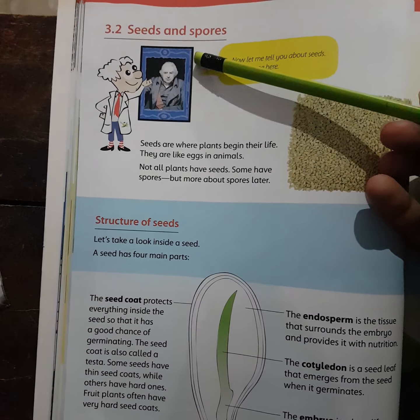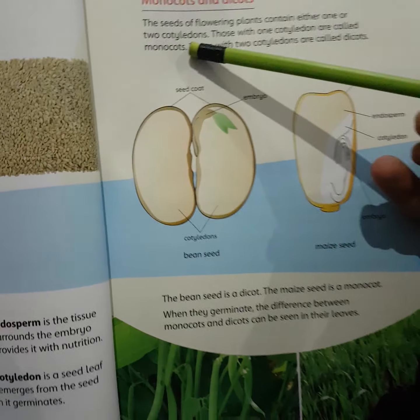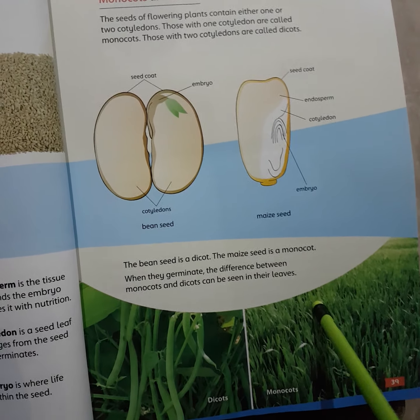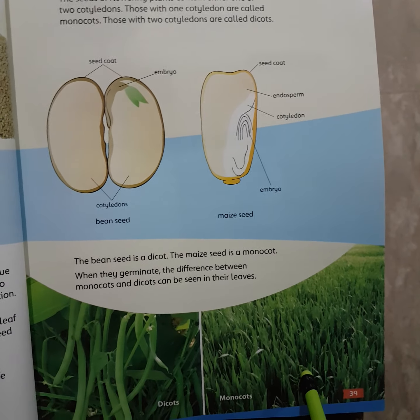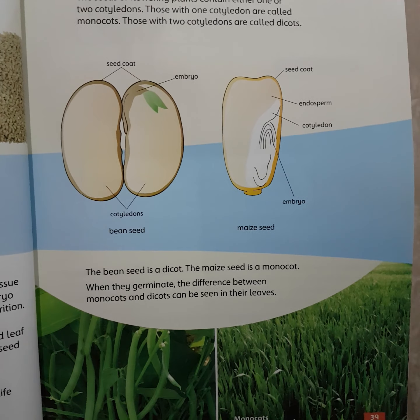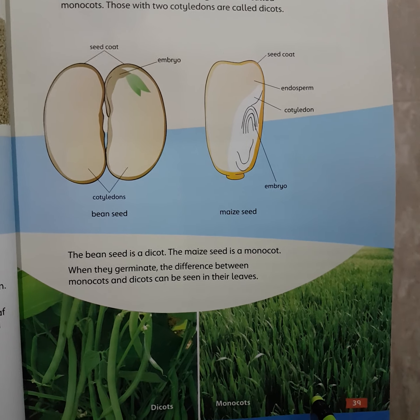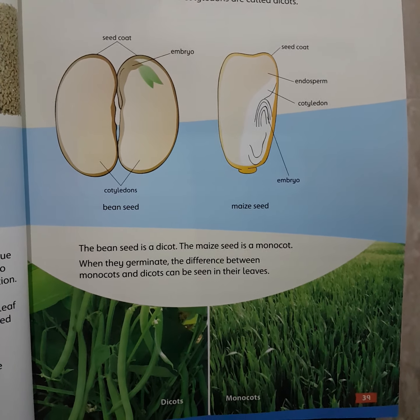Seeds and spores, structure of seeds, monocots and dicots — यहाँ तक हम अपने previous lecture में पढ़ चुके हैं। आज हम start करेंगे page number 40 से: Germination of Seeds.